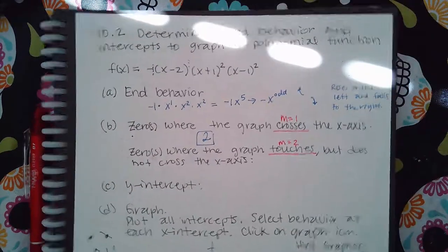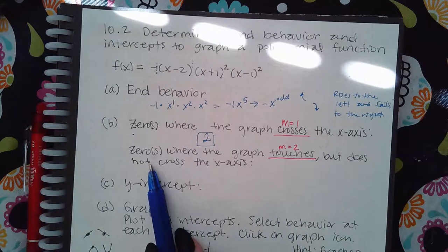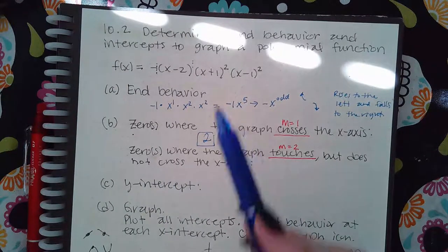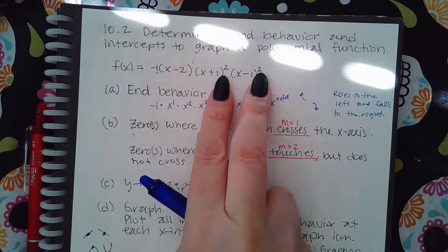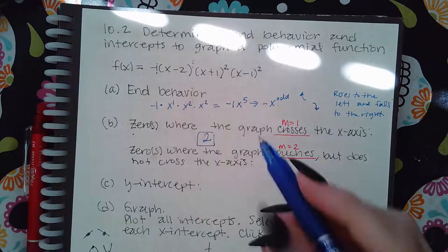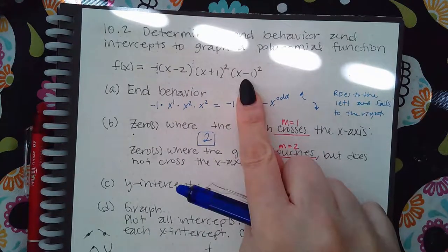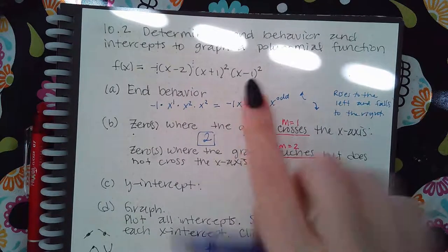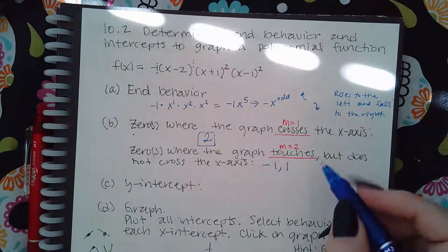To find the x-intercepts where the graph touches, I look at the two factors that have multiplicity two. Setting the first one equal to zero gives x equals negative one, and setting the second factor equal to zero gives x equals positive one.